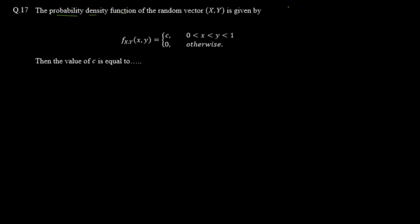Question 17 gives us the probability density function of the random vector (x, y). The PDF f(x,y) is equal to c where 0 < x < y < 1, and 0 otherwise. So f(x,y) = c for this condition.